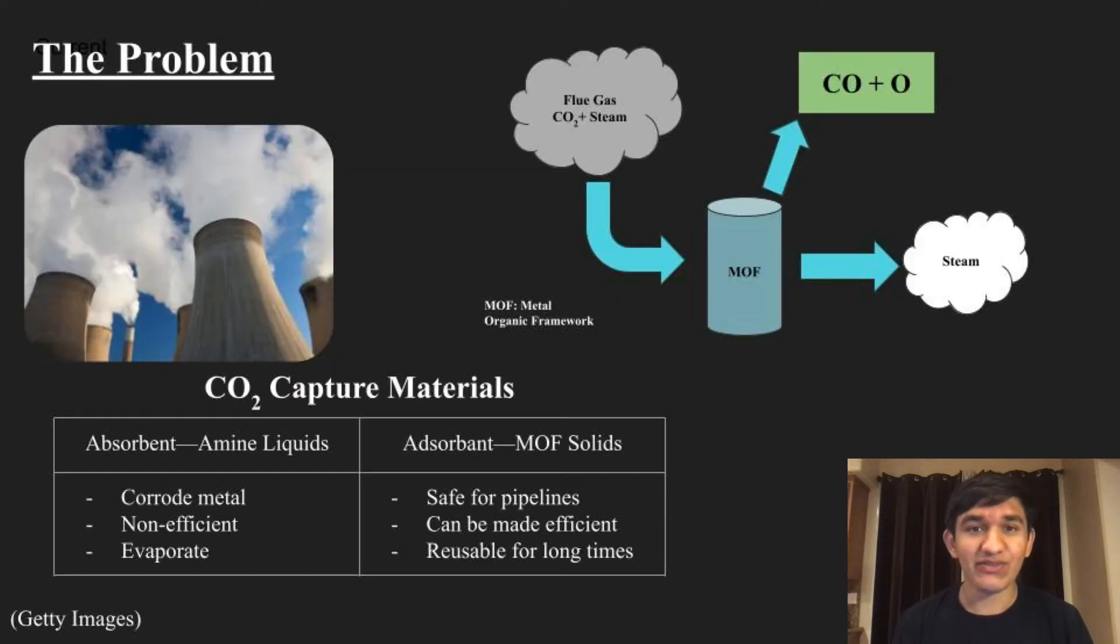Power plants burn fossil fuels which release toxic gas into the atmosphere. This gas, called flue gas, is rich in carbon dioxide and accounts for almost 50% of carbon emissions worldwide. The best way to combat this is point source carbon capture. This takes carbon from the gas before it leaves the factory and puts it back into the ground.